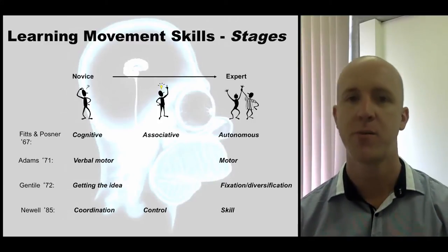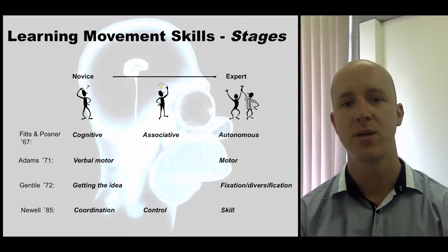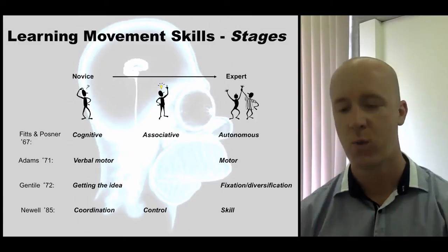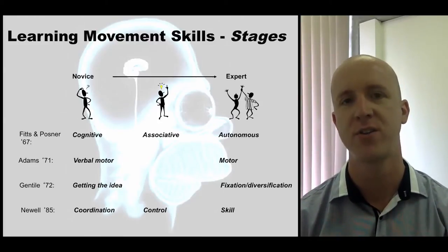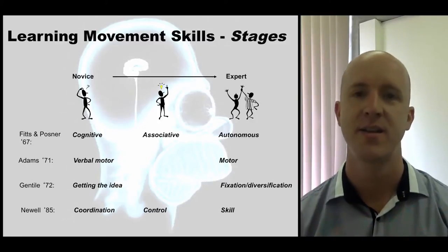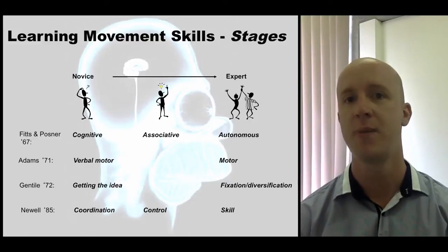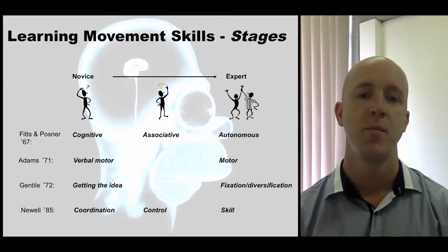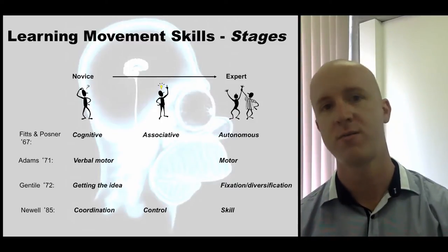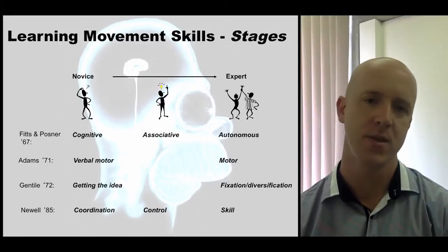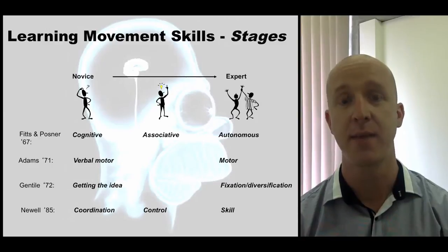Adams' model gives different labels to very similar concepts. Adams focused on the idea of a verbal stage, because in addition to being cognitive, he reasoned that you're actually talking yourself through the movement. Verbal reasoning is limited — there's only so much you can say linguistically at one time, whereas there are many other ways of expressing information. People often say body language conveys much more information than words alone. As you progress through Adams' model, by the end you've gone from verbal-motor to just pure motor — controlled in a motor sense without any need to think or reason through it.